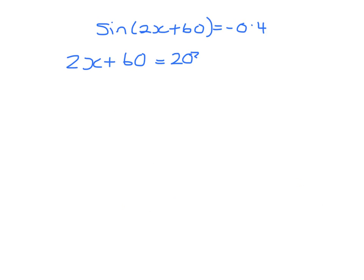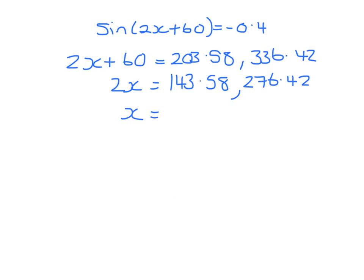203.58 or 336.42. So taking 60 away from each of those, 143.58 and 276.42. Now dividing both of those by 2 we get 71.79 and 138.21.